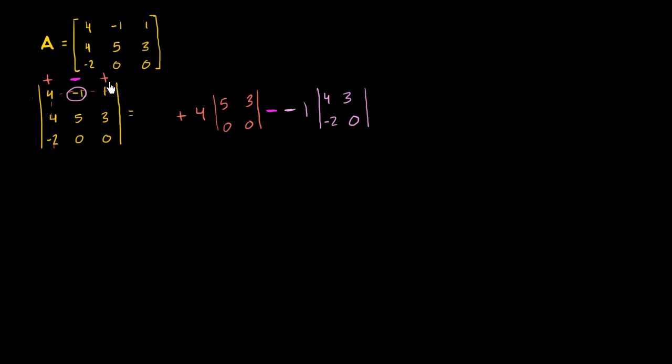And then finally, you have positive again. Positive times 1, this one right over here. Let me put the positive in that same blue color. So positive 1, or plus 1, or positive 1 times 1. Really, the negative is where it got a little confusing on this middle term. But positive 1 times 1 times the determinant of its submatrix.